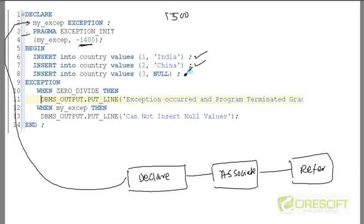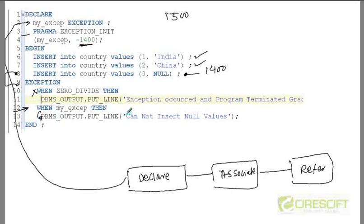When it comes to the problematic insert statement - inserting null - it raises error code 1400. As PRAGMA suggests, whenever error 1400 occurs it is interpreted as a compiler directive to look for the exception name 'my_except'. So after line 8, control goes to line 9, the exception handling block. It doesn't match ZERO_DIVIDE, but at line 12 it finds 'my_except', so control comes to that block.